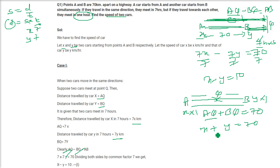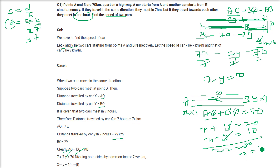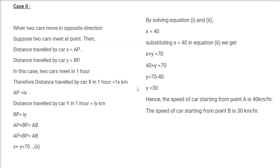So AQ plus BQ equals X plus Y equals 70. We now have X minus Y equals 10 and X plus Y equals 70. Adding them, 2X equals 80, so X equals 40. Putting X as 40, Y has to be 30. So the speed of the first car from A is 40 km/hr and the speed of the second car from B is 30 km/hr.